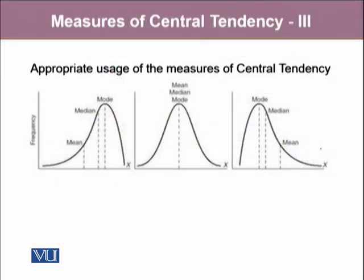Since we already know that our distributions can be of three different shapes: they can be negatively skewed, they can be symmetric, and they can be positively skewed.